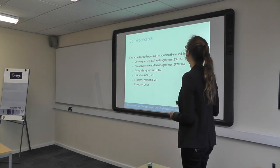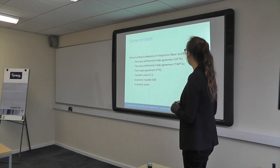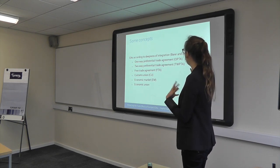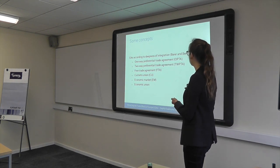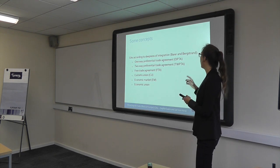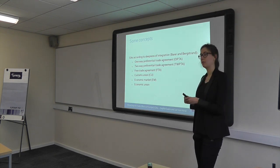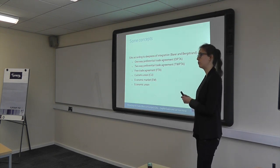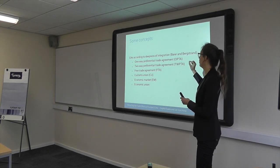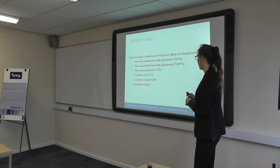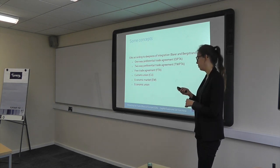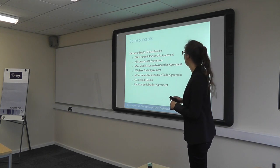The classification economists use is by depth of integration. There are preferential trade agreements — one-way and two-way — and since Europe doesn't have many two-way PTAs, we take those two categories together. Then there are free trade agreements, and then customs unions and economic markets. There are also economic unions, but Europe doesn't have any with different countries.